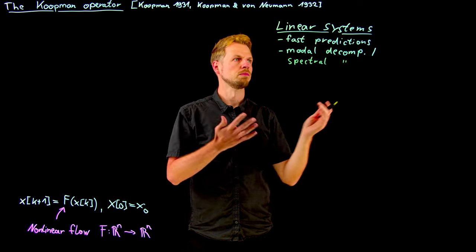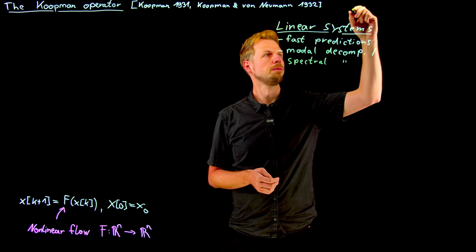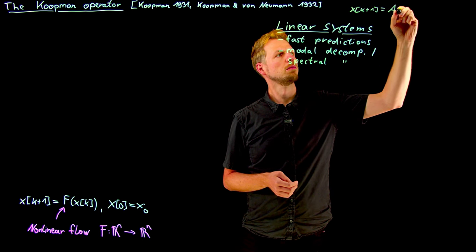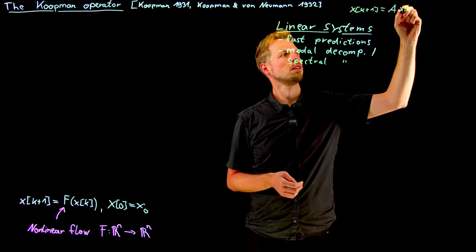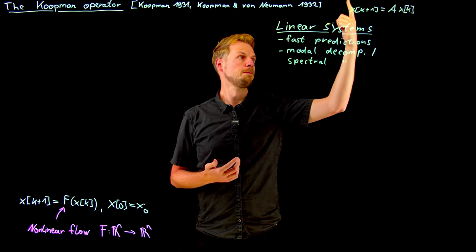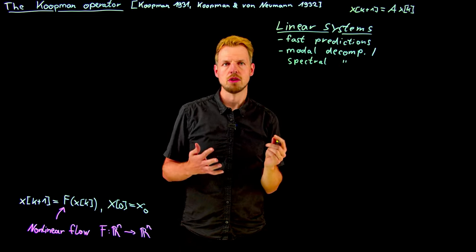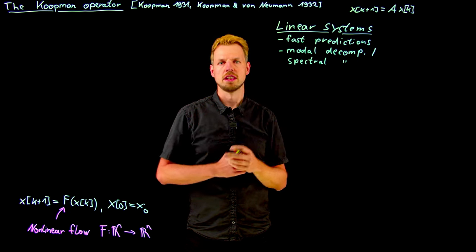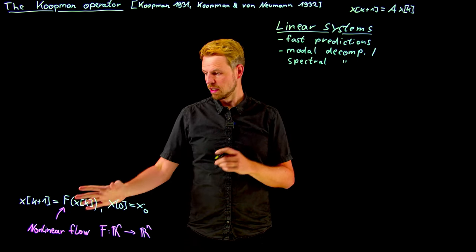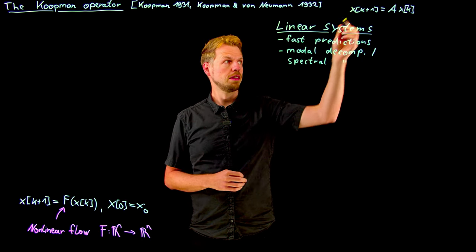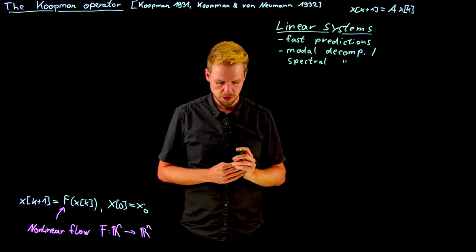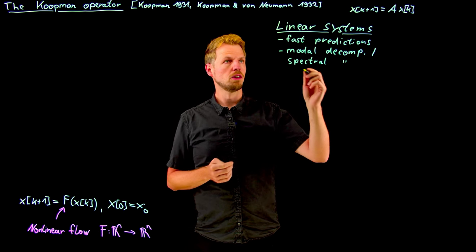So if we have a linear system, let's say something like x_{k+1} is A times x_k, where A is an n by n matrix, then we can study eigenvalues and eigenvectors of this A matrix, and thereby get a better understanding of the dynamics. So we are at a loss if we study nonlinear systems because these linear properties do not exist and we are limited in how to study these systems. And this is where the idea of Koopman came in.